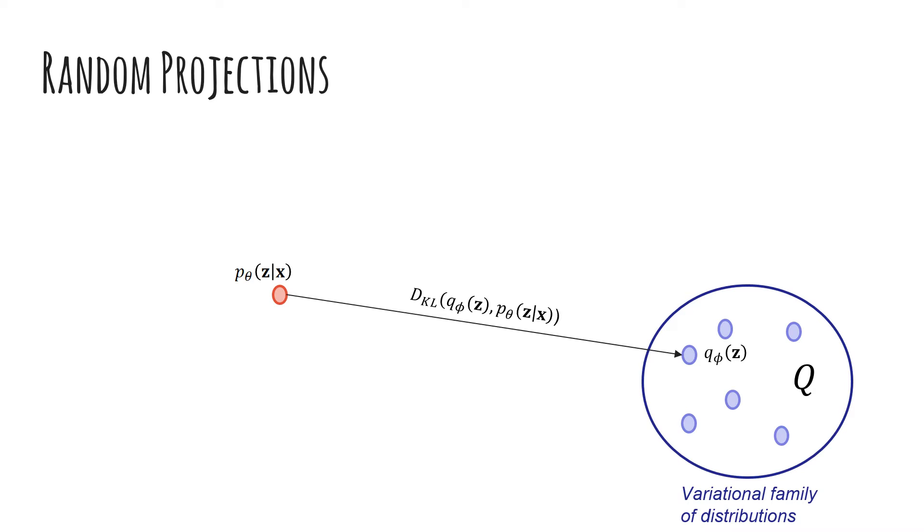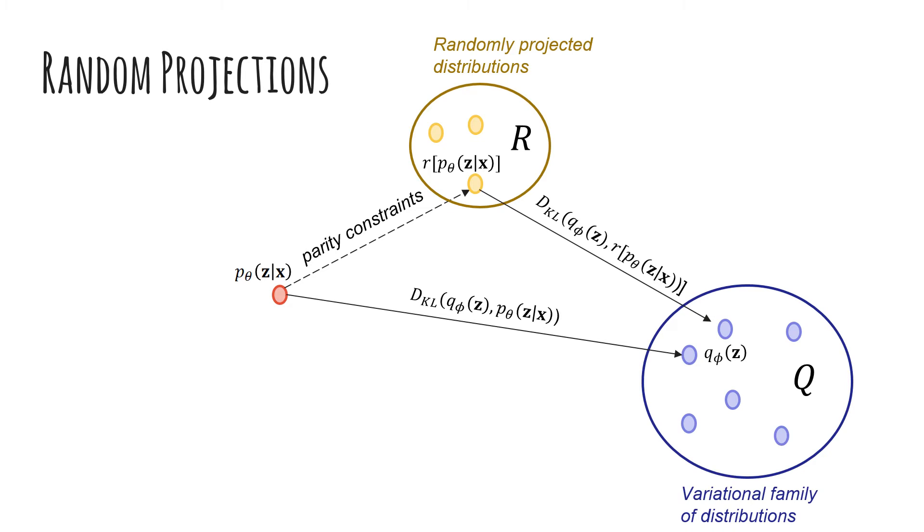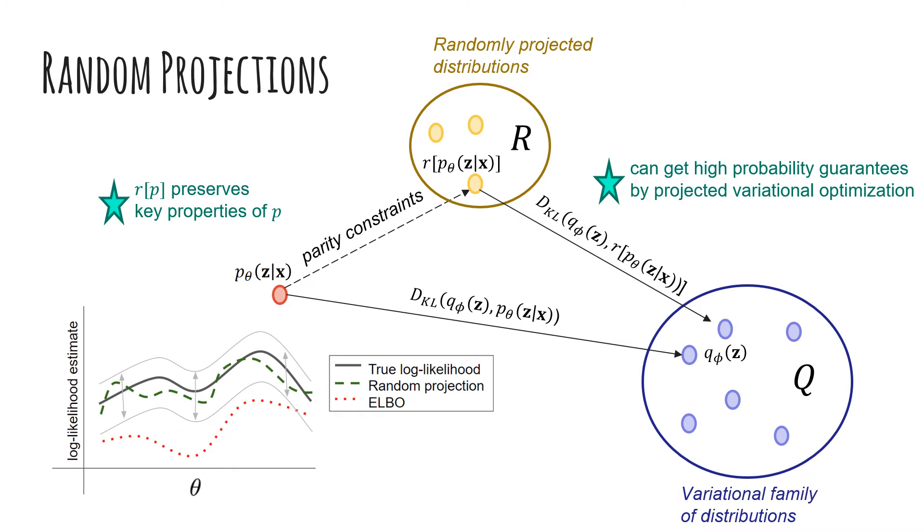we follow a two-step approach. First, we randomly project the true posterior using parity constraints. In the second step, we minimize the KL divergence between the variational distribution and the projected distribution as before. The randomly projected distributions are much simpler to characterize theoretically, and can also recover the true posterior since the parity constraints affect the original distribution in a highly predictable way. As a result, we get tight guarantees over our estimate that hold with high probability.